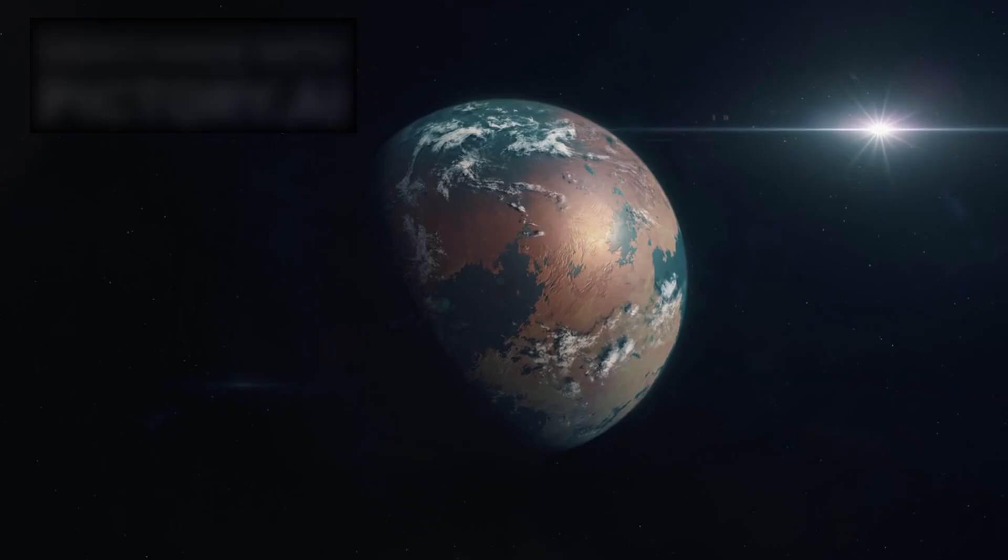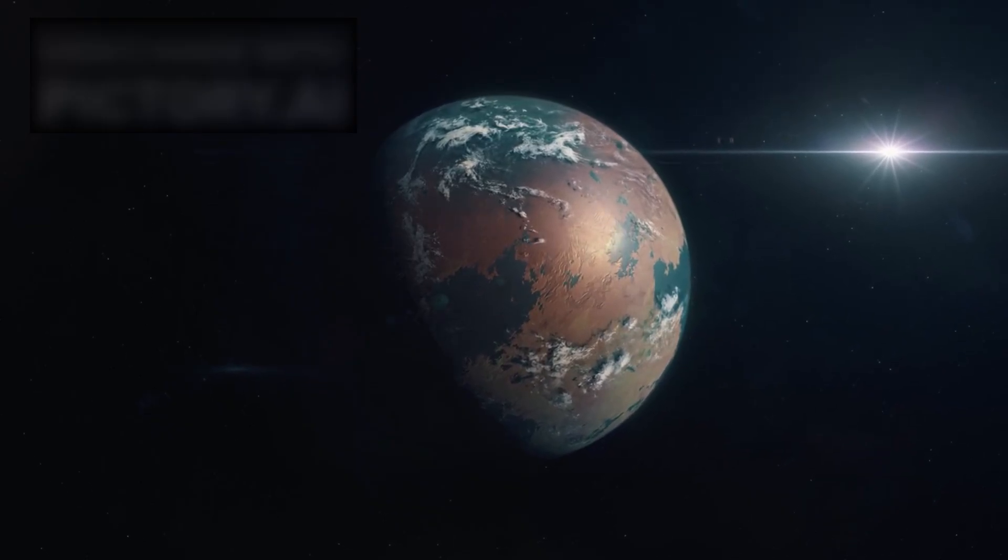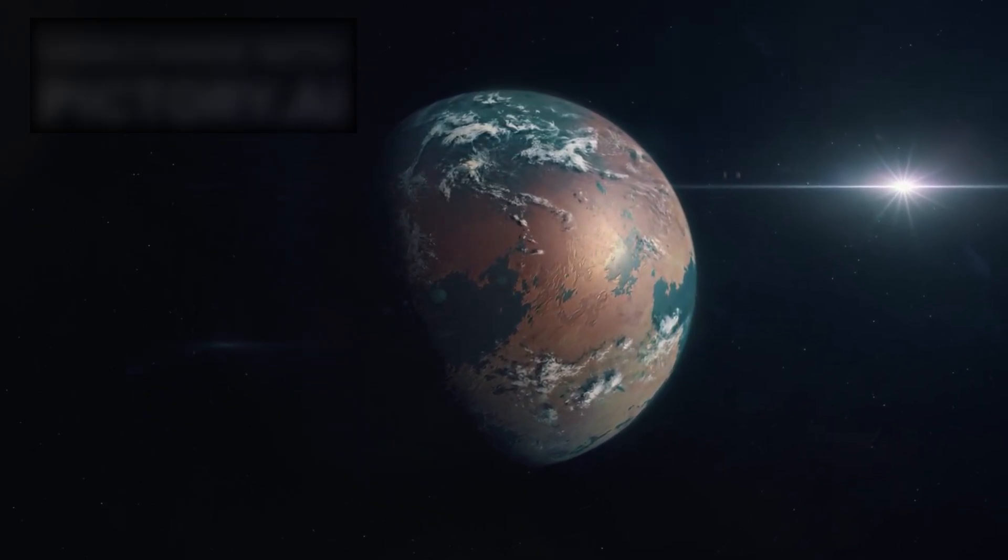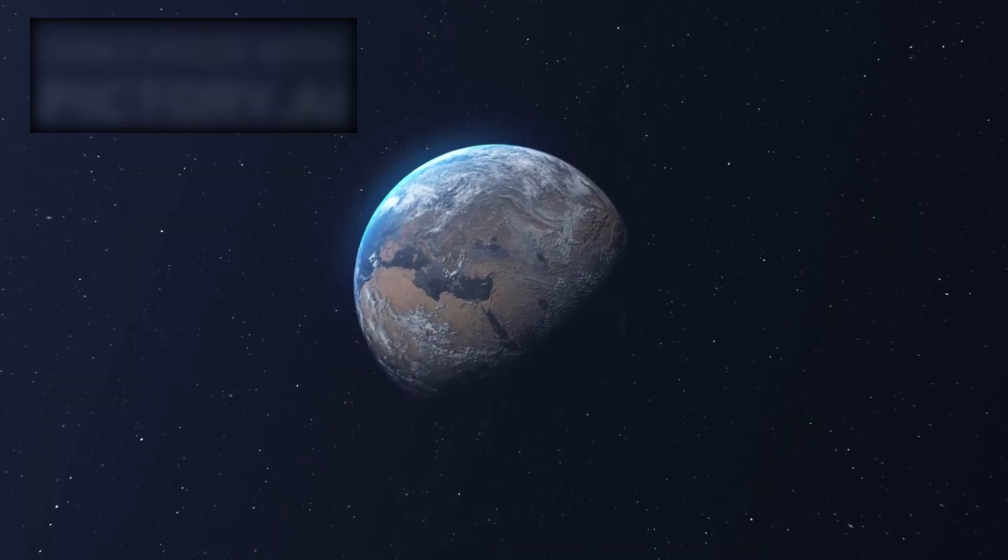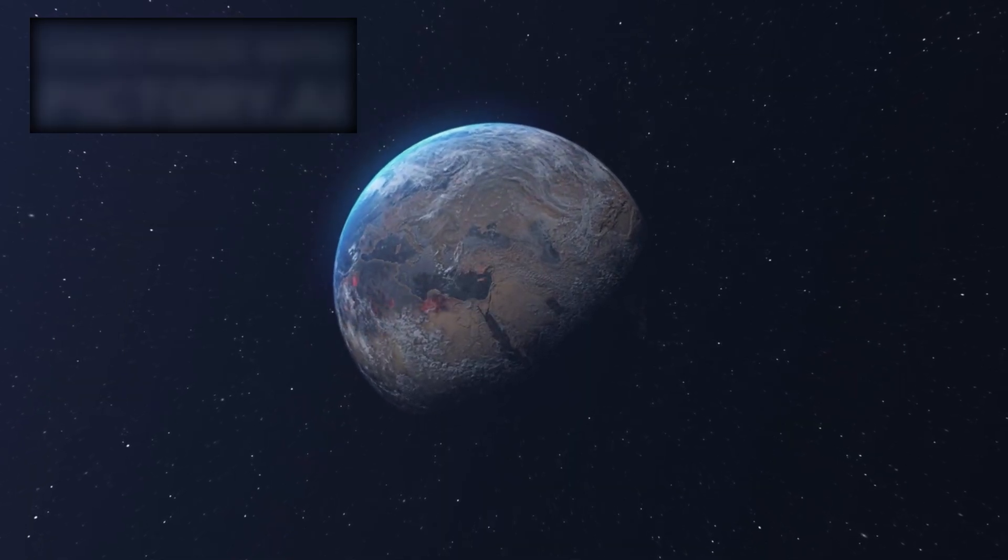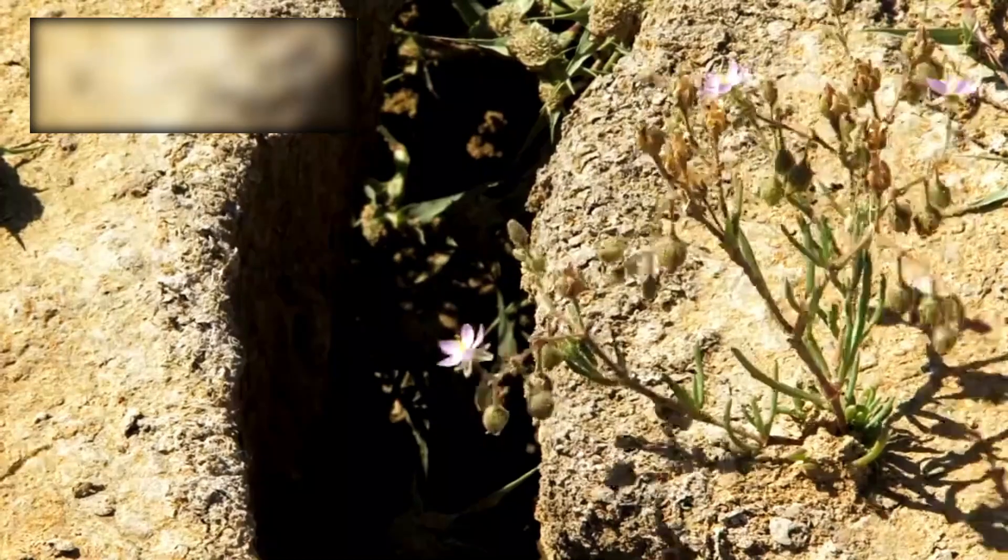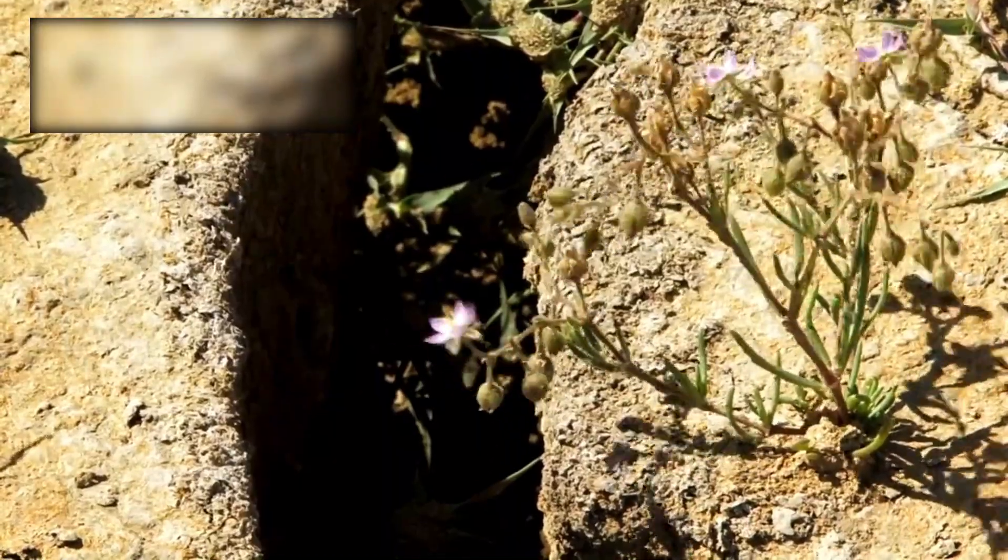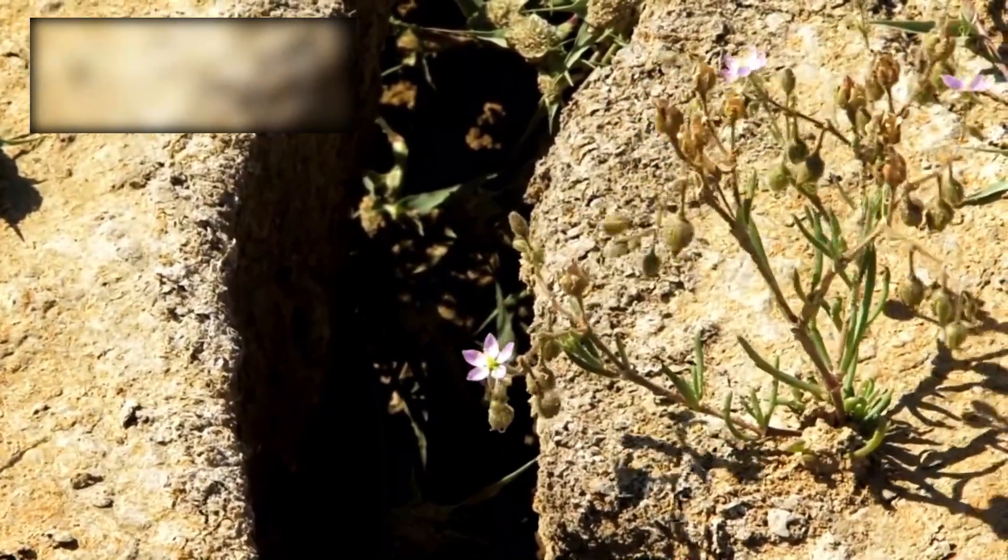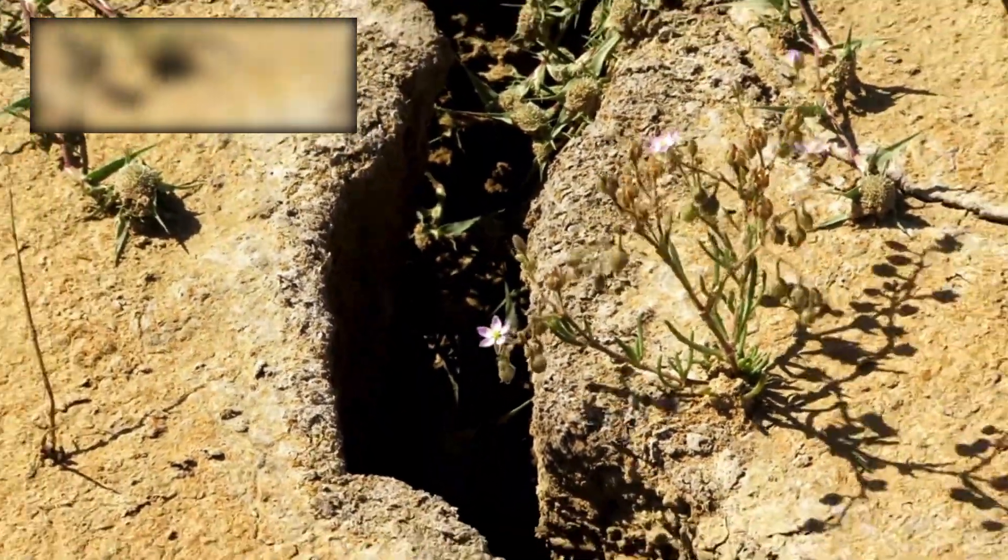Proxima b lies in what we call the habitable zone, the delicate region where temperatures could, in theory, allow liquid water. But habitability is more than distance, it's survival. If those stellar outbursts have eroded its atmosphere, Proxima b may be nothing more than a barren rock, scorched by radiation. Even the presence of an atmosphere would not guarantee safety.